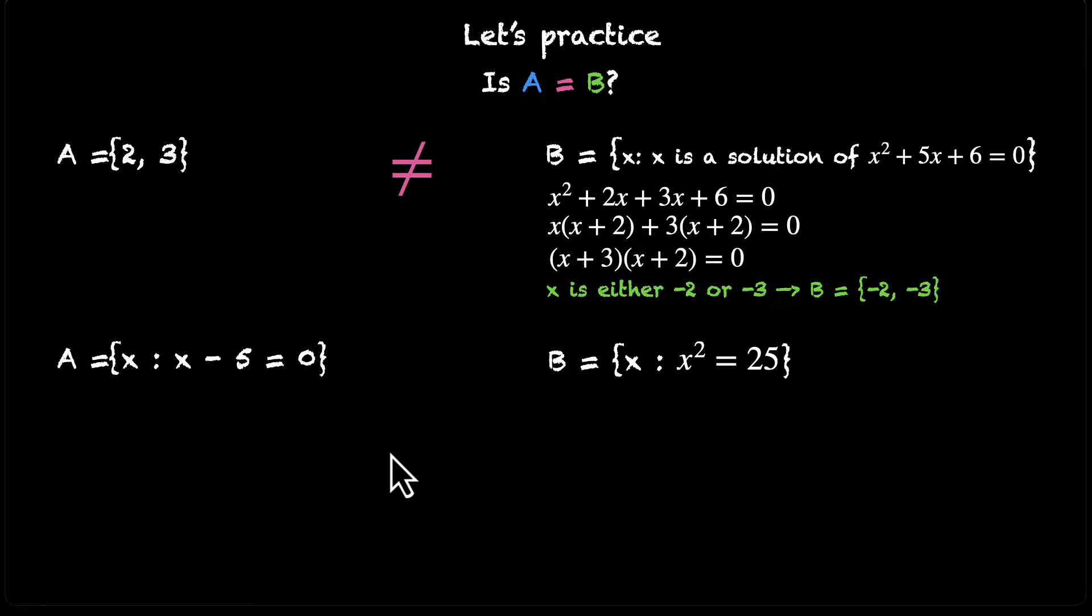What about the next one? Again, there's little to do here. There's more to do here. So let's start with B. X² = 25, which means X can either be -5 or 5. So B is the set of two elements {-5, 5}. And A is the set of only one element. That's only {5}.